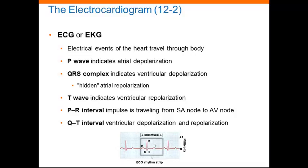On the electrocardiogram, there are a number of peaks labeled P, Q, R, S, and T. The P wave indicates atrial depolarization. The QRS complex indicates ventricular depolarization, and hidden behind the QRS complex is atrial repolarization. The T wave indicates ventricular repolarization. The times between waves are segments, and intervals include a segment and at least one wave. The PR interval occurs when an impulse is traveling from the SA node to the AV node, and the QT interval indicates the time required for ventricular depolarization and repolarization.